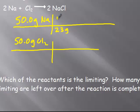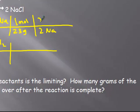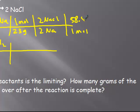So I have grams of Na. One mole of Na is 23 grams from the periodic table molar mass. The ratio is two Na's to two NaCl's, and one mole of NaCl is 58.5 grams — the molar mass of NaCl. So I converted from grams to moles of Na, applied the ratio, and then back to grams of NaCl. For Cl2: 71 grams in one mole.